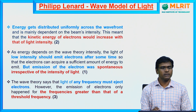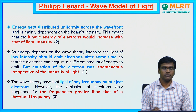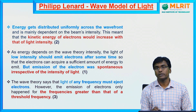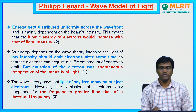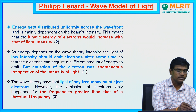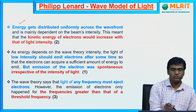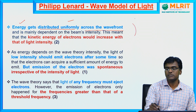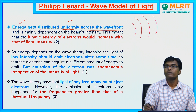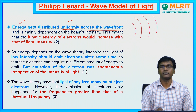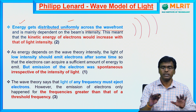In 1902, Philip Lenard was trying to explain these experimental observations using the classical wave model of light. According to the classical wave model, energy is uniformly distributed across the wave front — energy is not concentrated in a particular location but distributed all over the wave front.